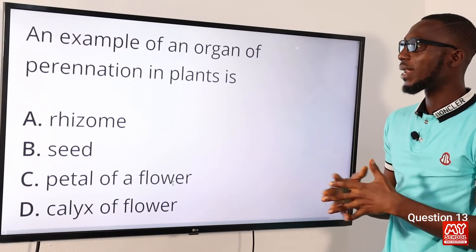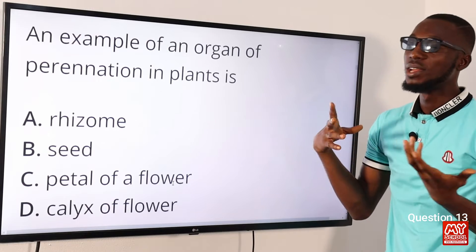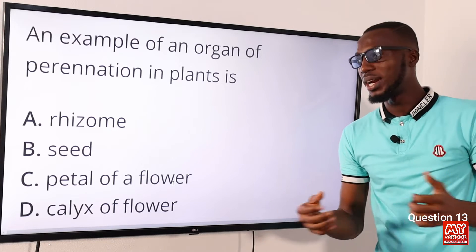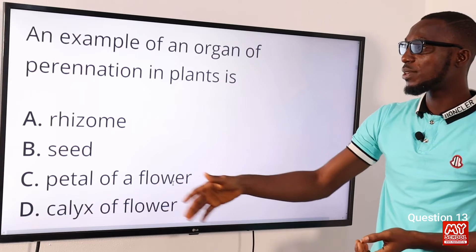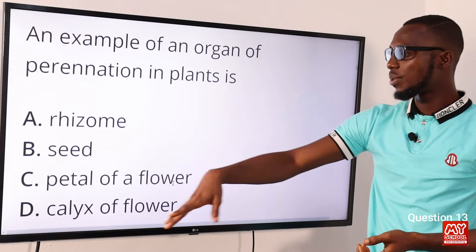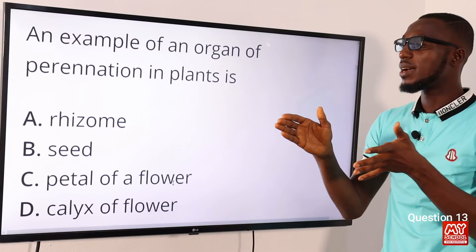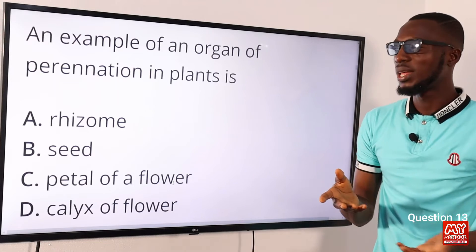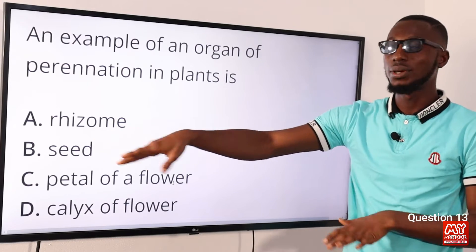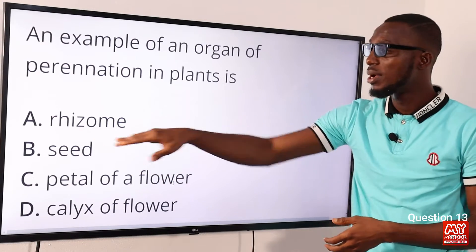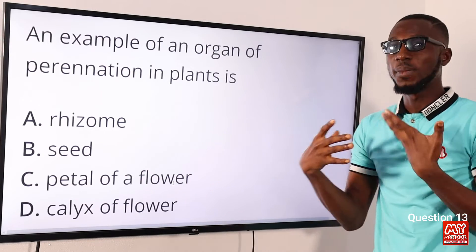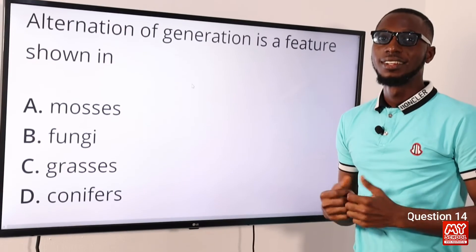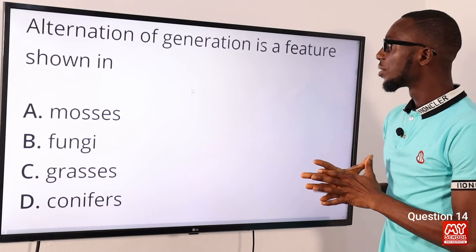Question thirteen: an example of an organ of perennation in plants is what? Perennation involves the storage of food under unfavorable conditions. Options include rhizome, seed, petal of a flower, and calyx. Some plants have storage organs like their fruits, seeds, stems, or roots. The most viable option here is the rhizome — other examples include tubers. So the correct option is option A for rhizome.